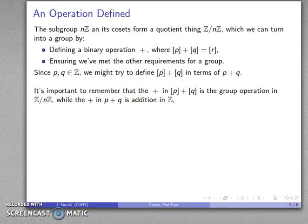And one caution here, one thing we should be careful with, is that when we write plus here, it actually means the group operation on the set of cosets, that is to say, Z divided by nZ. On the other hand, when I write the plus here, p and q are both integers, so this is ordinary integer addition.